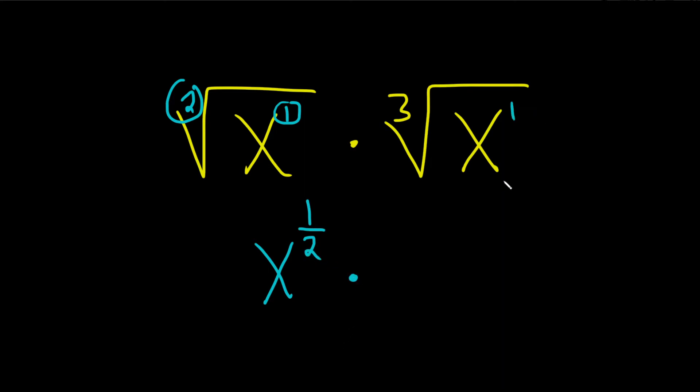Same thing here. There's a 1 here. So here it'll be x to the, and again, it's this number over this number. So 1 over 3.